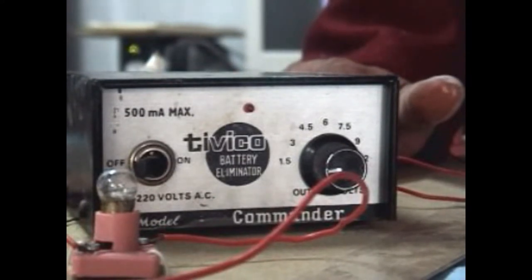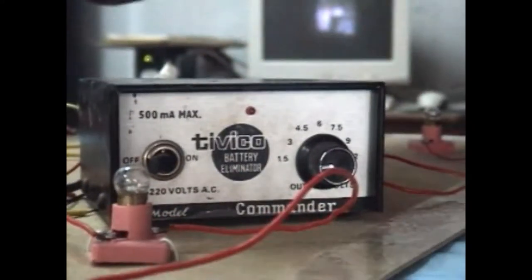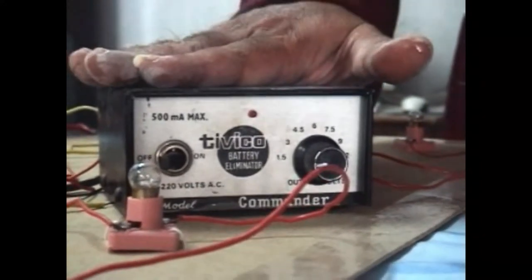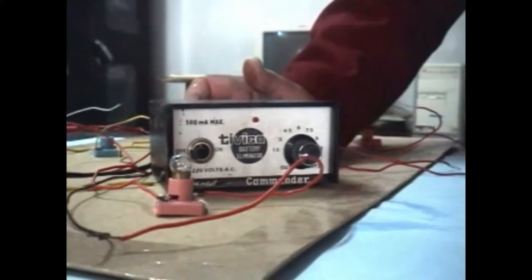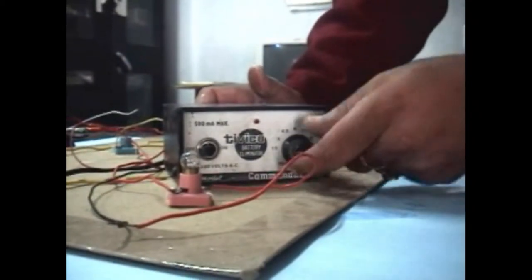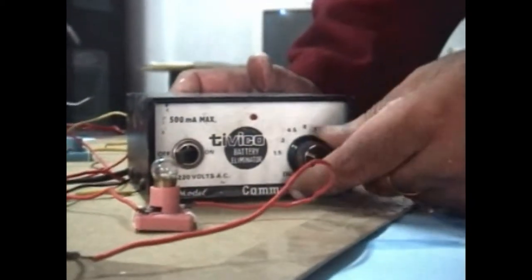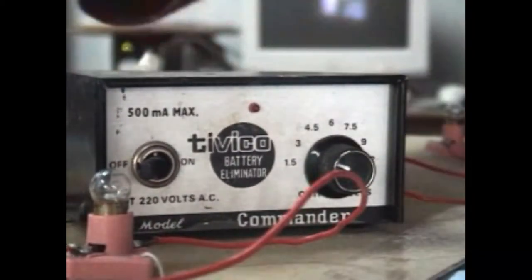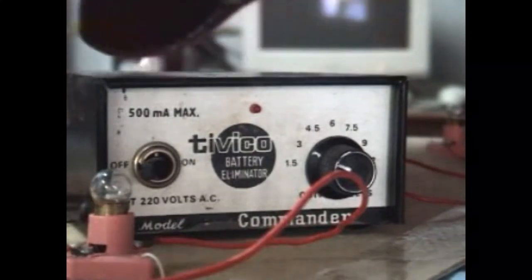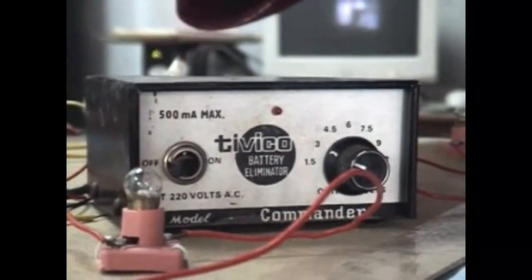Now let us see. Obviously, seeing is believing. Here, I took one battery eliminator. This battery eliminator can supply variable voltage. By switching this, we can increase the potential difference. And I have connected this battery eliminator across the bulb.